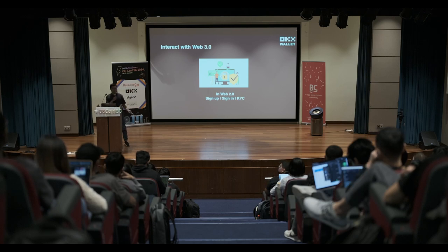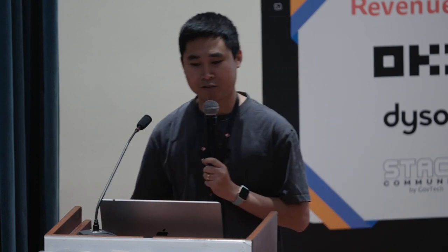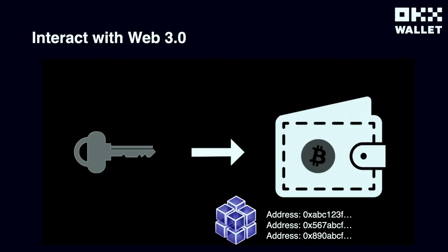Now that we have a better understanding of Web3, how do we interact with it? In Web 2, you need to sign up or sign in to a platform, sometimes with KYC, and then they can use your information for monetizing without your permission — that's a privacy issue. In Web3, what identifies you on the network or platform is just an address generated by your private key.